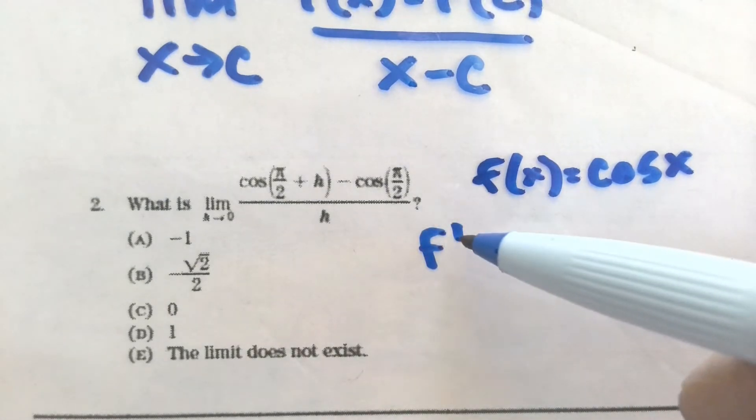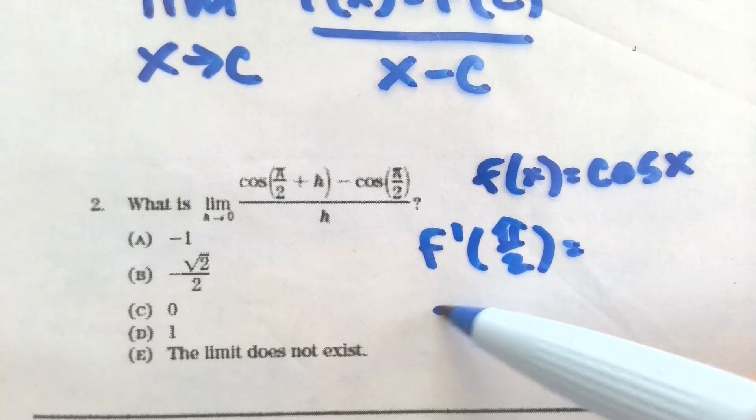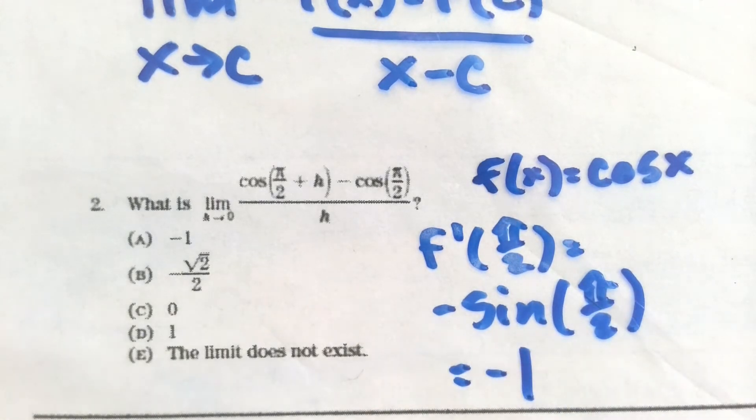So they're trying to find f prime of pi over 2. Instead of simplifying, I can just say, okay, well, my f prime, the derivative of cosine is just negative sine, and then I'm evaluating at pi over 2. So since sine of pi over 2 is 1, my answer is just going to be negative 1 for that derivative.